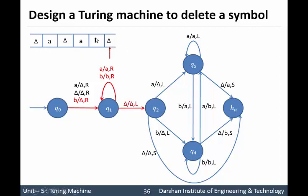Whenever we encounter delta at the right end, our task is to shift every symbol one step to the left. We have to shift delta instead of B. We have to shift B instead of A, and we have to shift A instead of delta. Now the head pointer is pointing to delta, so replace delta by delta and move to the left direction. In the left direction, B is replaced with delta and we move to the left direction.